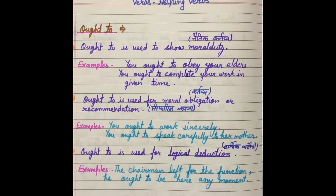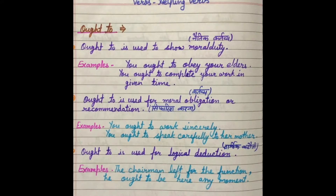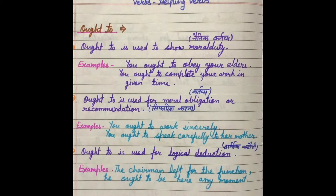Hello students, welcome back in your English class. Our chapter 7, Verbs: Helping Verbs, is going on. I already explained that there are two types of verbs: primary auxiliary verbs and modal auxiliary verbs. Primary auxiliary verbs are the forms of be, have, and do, and we will discuss those in our chapter on tense.